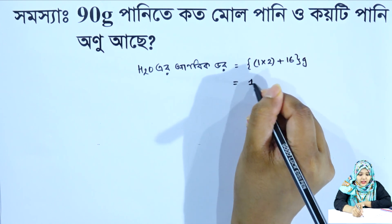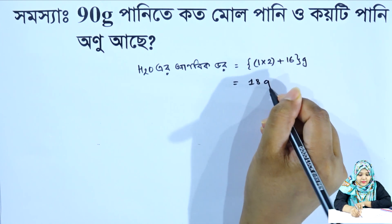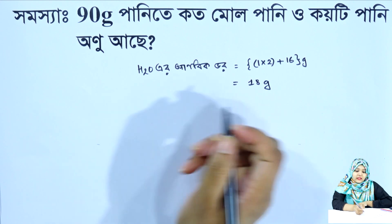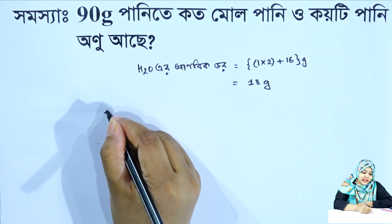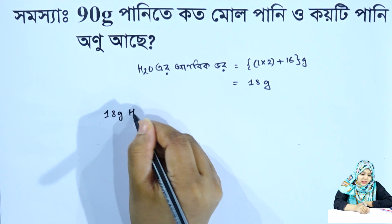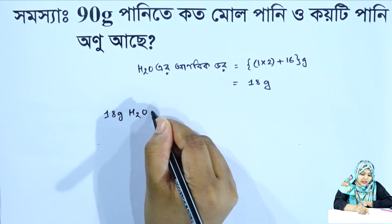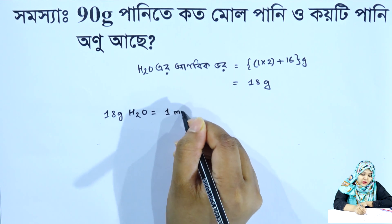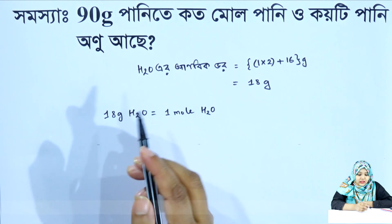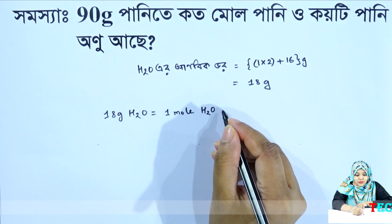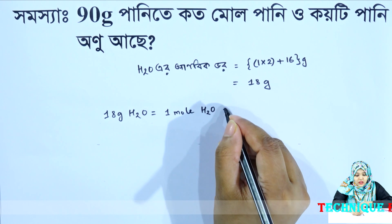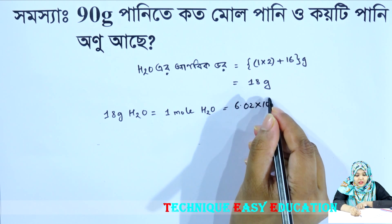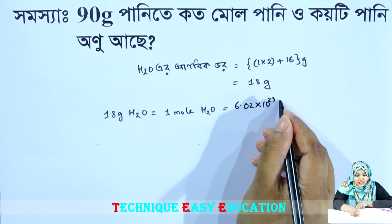18 gram, 1 mole, 6.02 into 10 power 23. So, 18 gram of water is equal to 1 mole, and 1 mole is equal to 6.02 into 10 power 23 molecules.